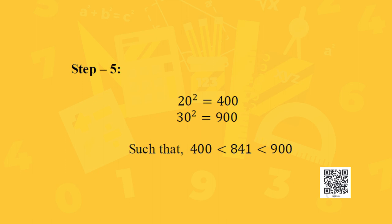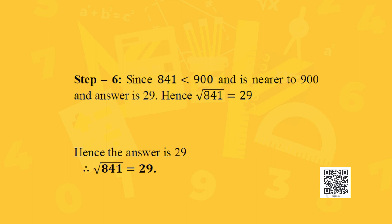Append 0 to make them two-digit numbers: 20 and 30. Take their squares: 20² = 400 and 30² = 900. Our given number 841 lies between 400 and 900. Since 841 is nearer to 900, which is the right-side number, the required units digit must be 9. Therefore, the square root of 841 is 29.